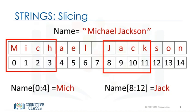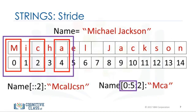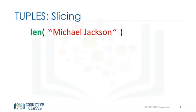We can treat the string as a sequence and perform sequence operations. We can also input a stride value as follows. The 2 indicates we'd select every second variable. We can also incorporate slicing. In this case, we return every second value up to index 4. We can use the len command to obtain the length of the string. As there are 15 elements, the result is 15.